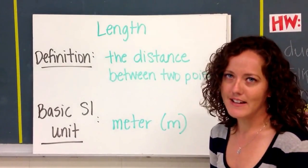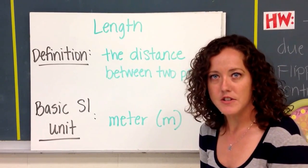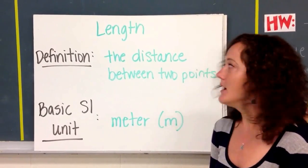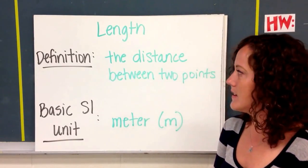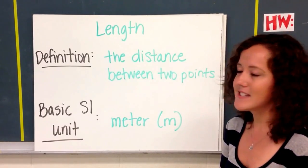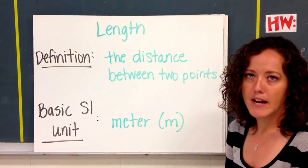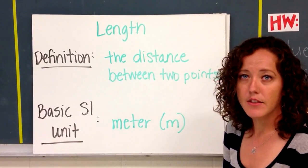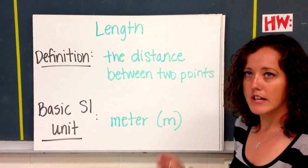So today we'll talk about length, and you have some space on your notes to fill in the definition of length. Pretty simple. It is simply the distance between two points. Often when we're talking about length, it's the shortest distance. And the basic SI unit is the meter. When we write meter, a lot of times instead of writing the whole word, we'll just simply write lowercase m for abbreviation.